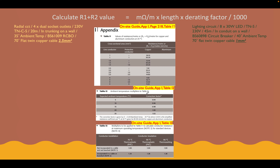The ambient temperature multipliers to add to Table I1 are our de-rating factor. For example, if our ambient temperature was 25 degrees for our circuit, our de-rating factor would be 1.02. The table at the bottom gives multipliers to be added to Table I1 to calculate conductor resistance at maximum operating temperature for standard devices. It's more important that we know our cable can work at maximum operating temperatures — the worst-case scenario, which is always what we consider in cable design. So we're going to use that bottom table to get our de-rating factor.